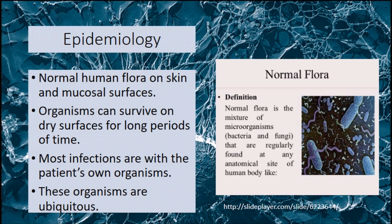So for epidemiology, Staph aureus is considered normal human flora on the skin and mucosal surfaces. Organisms can survive on dry surfaces for very long periods of time. Most infections are from the patient's own organisms, and these organisms are very ubiquitous — they're found everywhere.